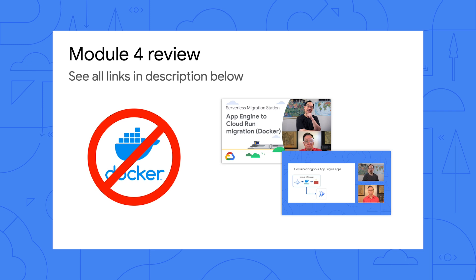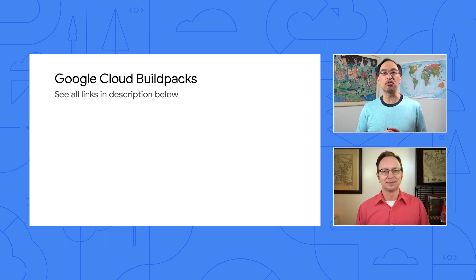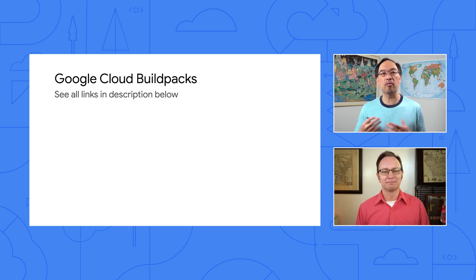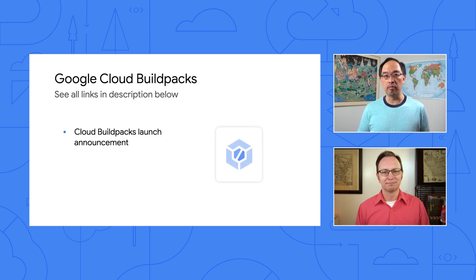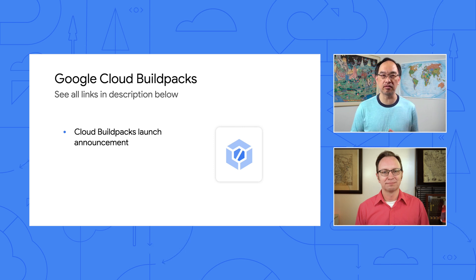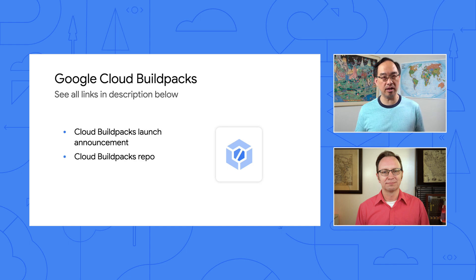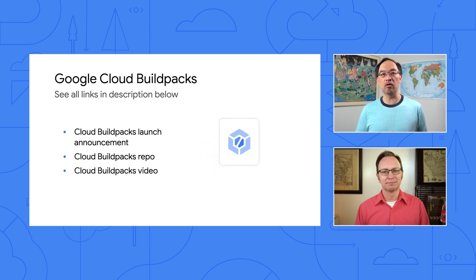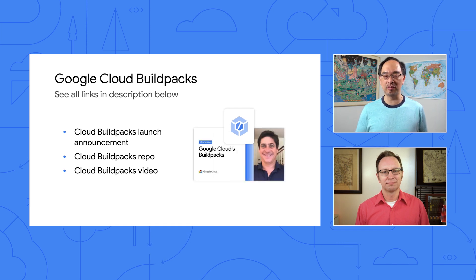OK, that sounds great. But how are we going to containerize an app without Docker? Well, we're going to use Google Cloud Buildpacks to do the job. Instead of having to describe all the steps for building the container, Buildpacks lets you off the hook because it does the heavy lifting. It looks at your code, what language it's in, its third-party dependencies, and so on, then builds the most efficient container image it can. Check out these links and this video from one of our colleagues to learn more about Cloud Buildpacks.